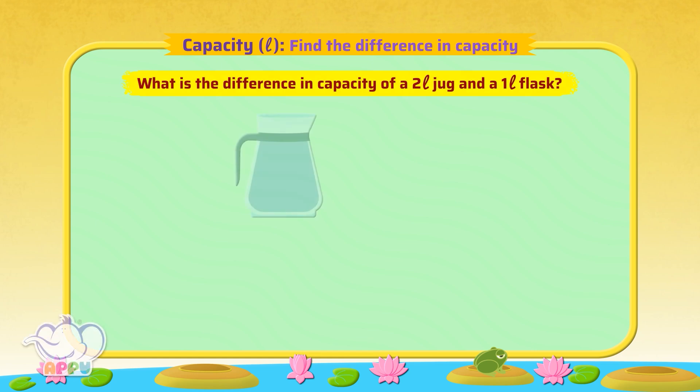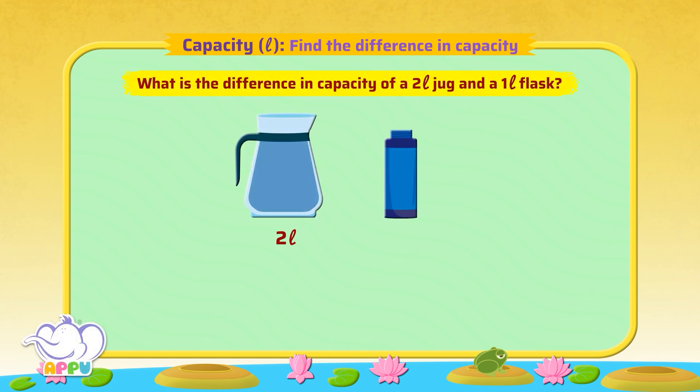What is the difference in capacity of a 2 litre jug and a 1 litre flask? To find the difference in capacity of a 2 litre jug and a 1 litre flask, we subtract capacities from each other.